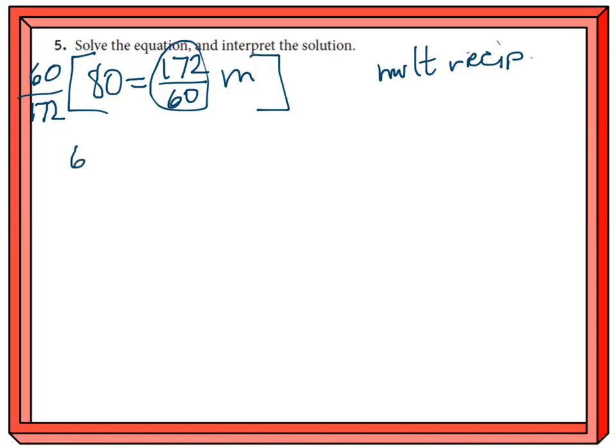So I have 60 over 172 times 80 is equal to m, and this is just a calculator problem. We're just going to stick that into the calculator, you can stick it in just like you see it and see what's what. So whenever I put this into the calculator here, I get about 27.9. So here's our answer when we round it.